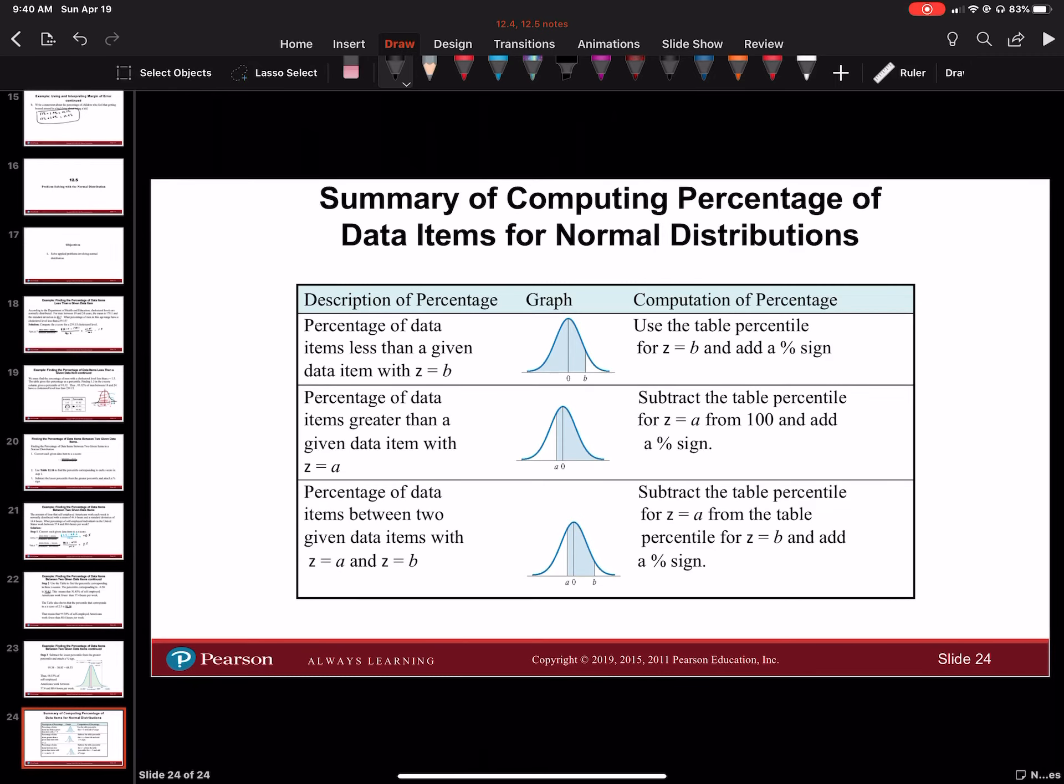For the percentage of data items greater than a given data item with z equal to a, subtract the table percentage for z equal to a from 100 and add a percent sign. Basically you're finding the percent on the other side, or you can look at the negative of that number. It'll be the same thing.